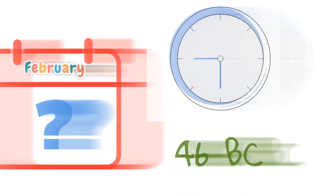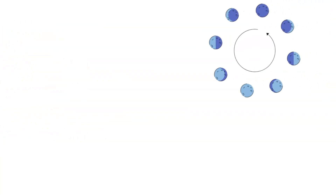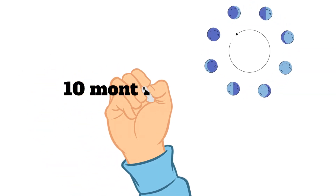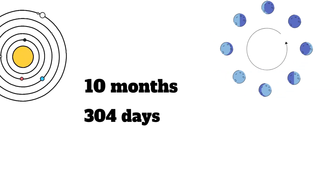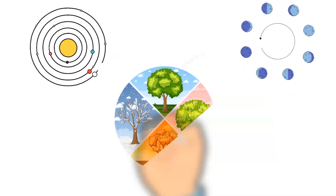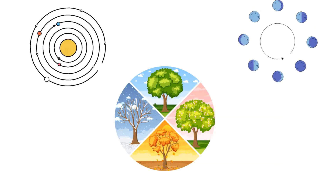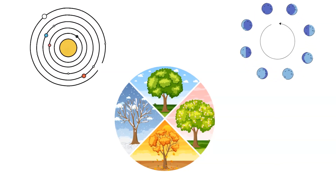To understand this, let's go back to 46 BC, when the calendar as we know it today was invented by Julius Caesar, who was the Roman dictator at the time. Before his reforms, the Roman calendar was in use. It was based on lunar cycles and consisted of 10 months totaling 304 days, which caused it to fall out of sync with the solar year. This discrepancy led to irregularities in seasons and agricultural practices, prompting the need for adjustments to keep the calendar aligned with the natural cycle of seasons.